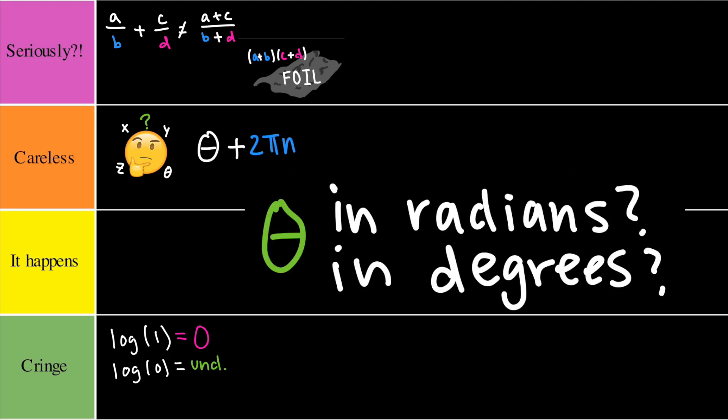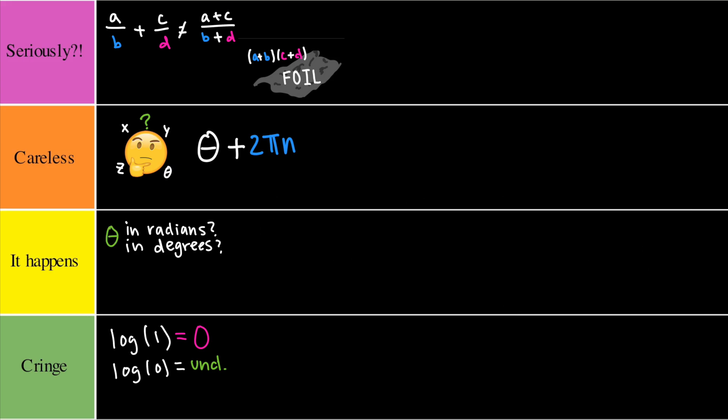Speaking of angles, next up we have radians and degrees. This is often a mistake that students make on their calculator. This would go in the it happens tier because it happens a lot when students are using their calculator and just trusting it blindly. However, this could also go really wrong if you're taking a big exam, say the AP calculus exam.